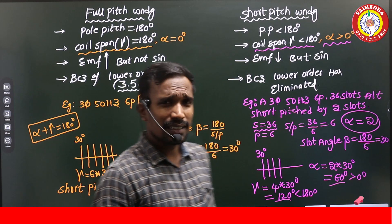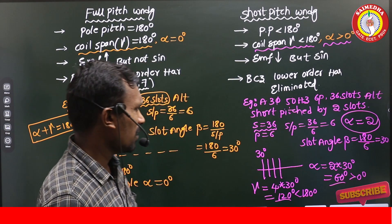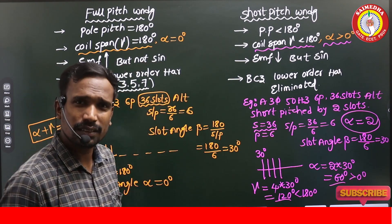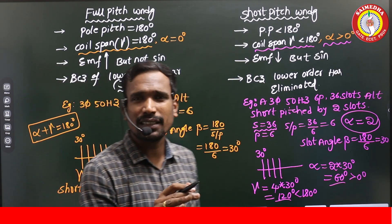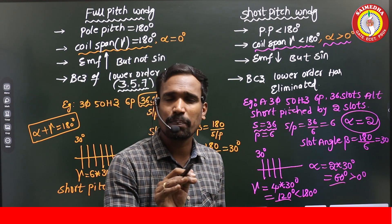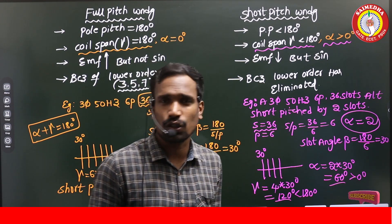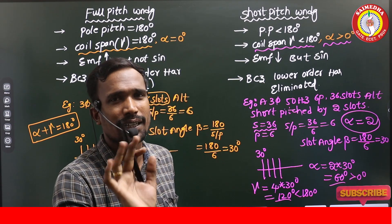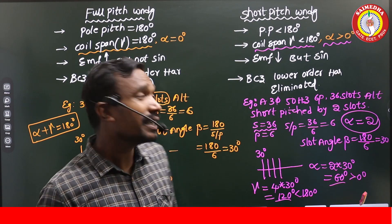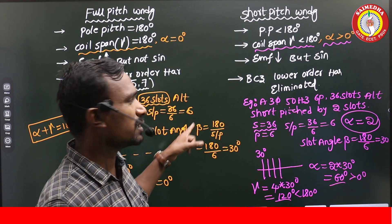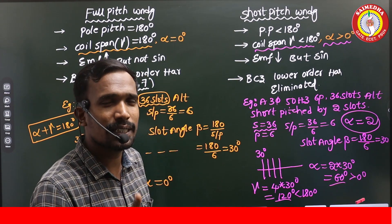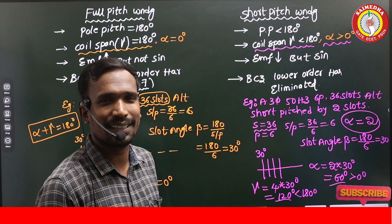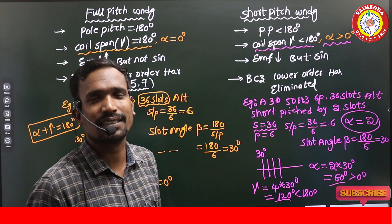Those are the differences between full pitch winding and short pitch winding. Next, let's see how we can reduce harmonics and what the pitch factor, coil span factor, or chording factor is — that is very important, both theoretically and for numericals.